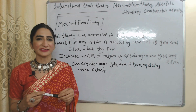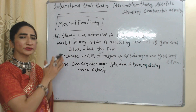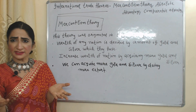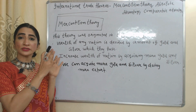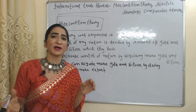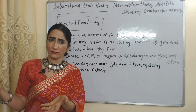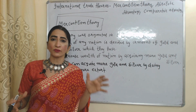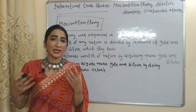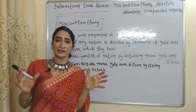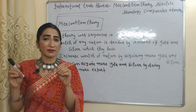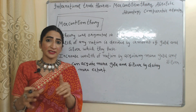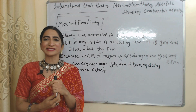First, we are going to talk about mercantilism theory of international trade. This theory was originated in the 16th century. According to this theory, the wealth of any nation is decided by the amount of gold and silver which they have. We can increase the wealth of a nation by acquiring more gold and silver, and we can acquire more gold and silver by doing more export, because during that time period in return of export we received gold and silver.